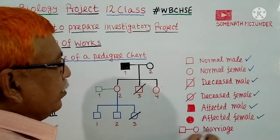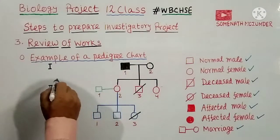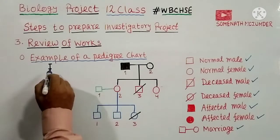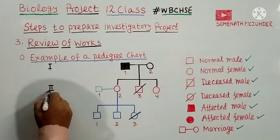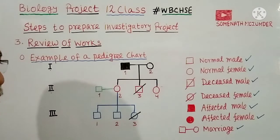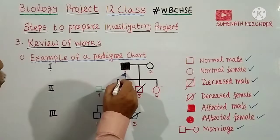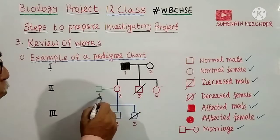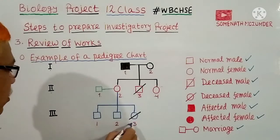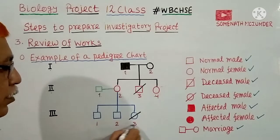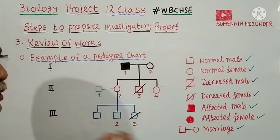A horizontal line between symbols represents marriage. Generations are represented by Roman numerals — Roman I for first generation, Roman II for second generation, and Roman III for third generation. Individuals within each generation are represented by common numerals: 1, 2 for generation I; 1, 2, 3, 4 for generation II; and 1, 2, 3 for generation III. This is an example of a pedigree chart.